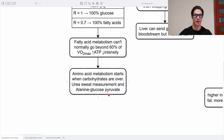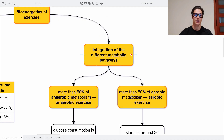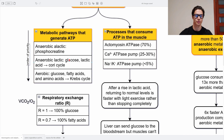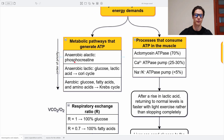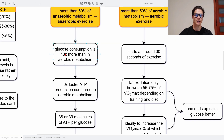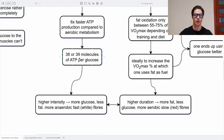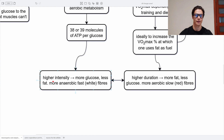The alanine-glucose-pyruvate cycle is the mechanism we use to create glucose from amino acids. Regarding the integration of different metabolic pathways: when we have more than 50% of anaerobic metabolism, that's considered anaerobic exercise — using phosphocreatine or glycolysis creating lactic acid. In this state, glucose consumption is 13 times more than in aerobic metabolism, with 6 times faster ATP production, and we create 38 to 39 molecules of ATP per glucose molecule. At higher intensity, we use more glucose and less fat, and more anaerobic fast white fibers.